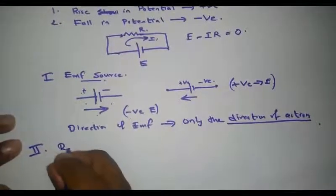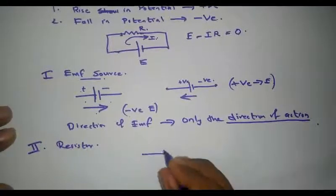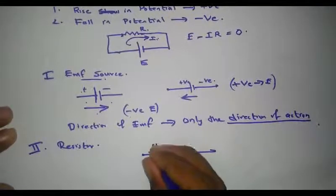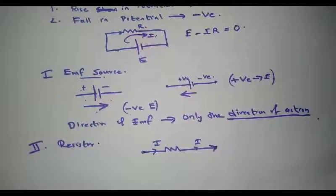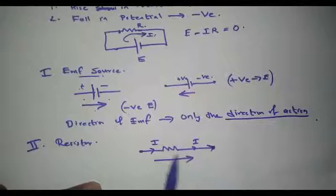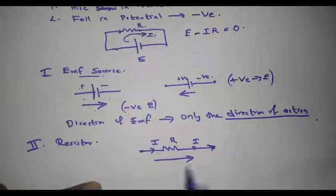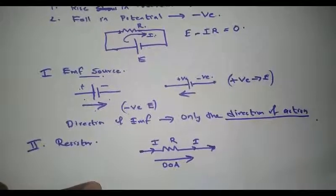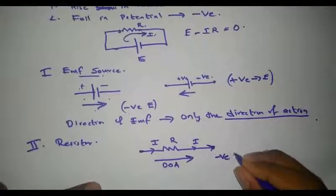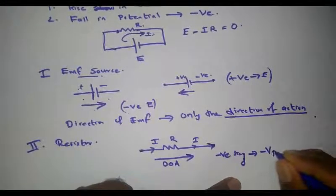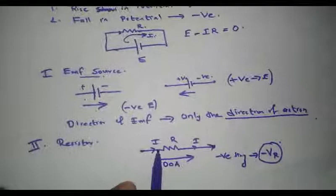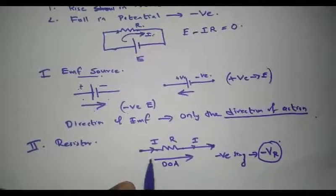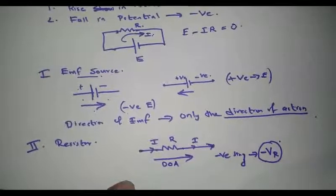Now let us consider the case of a resistor. Consider a resistor R with current I flowing through it from left to right (clockwise direction). If my direction of action is also in the same direction as the current flow, then since current flows from a higher potential to a lower potential point, I am moving along with the fall in potential. Therefore I must assign a negative sign to the voltage drop, written as minus VR.